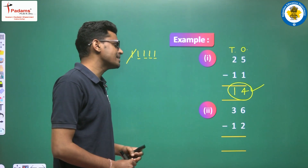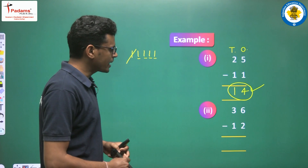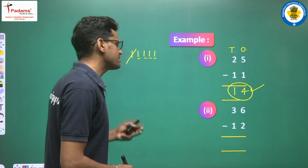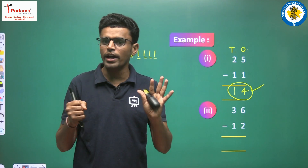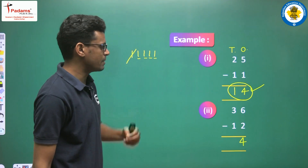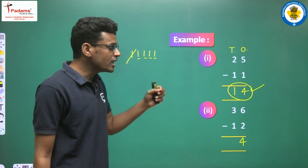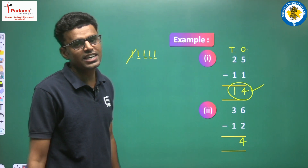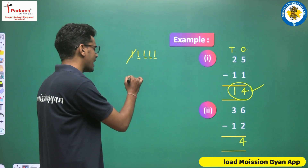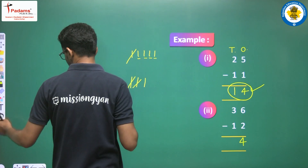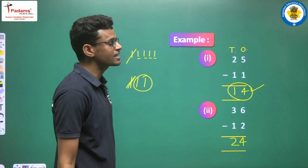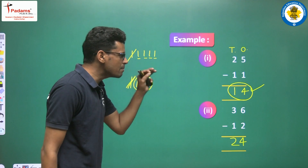The next example: subtract 12 from 36. At the ones places, the first number has 6 and the second number has 2. We subtract 6 minus 2: open 6 fingers, close 2 fingers, remaining — one, two, three, four — so we write 4. For the tens places, the first number has 3 and the second has 1. Draw 3 lines, close 1, remaining is 2. So 36 minus 12 equals 24.